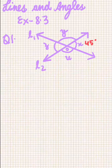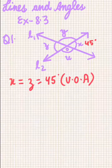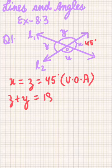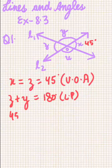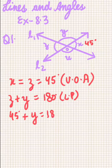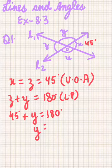Now, on line L2, z plus y form a linear pair. We have the value of z as 45 degrees, so 45 plus y equals 180 degrees, and therefore y equals 135 degrees.